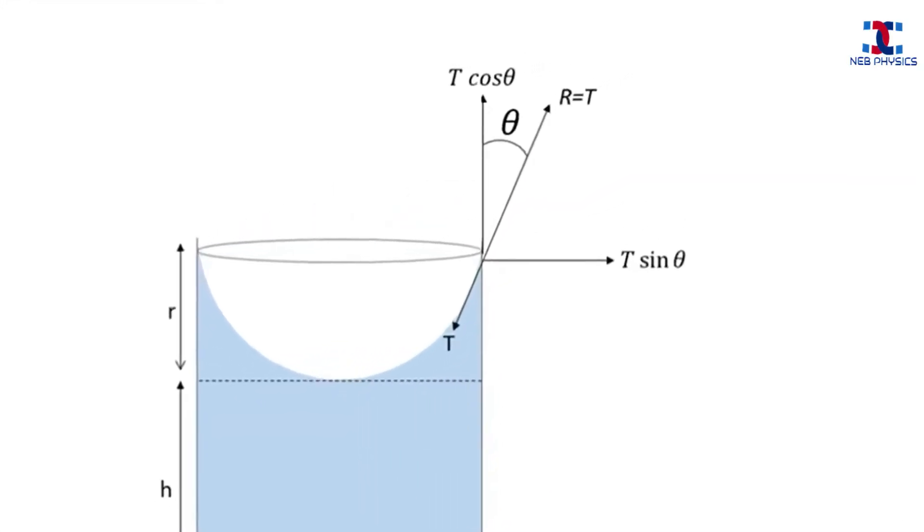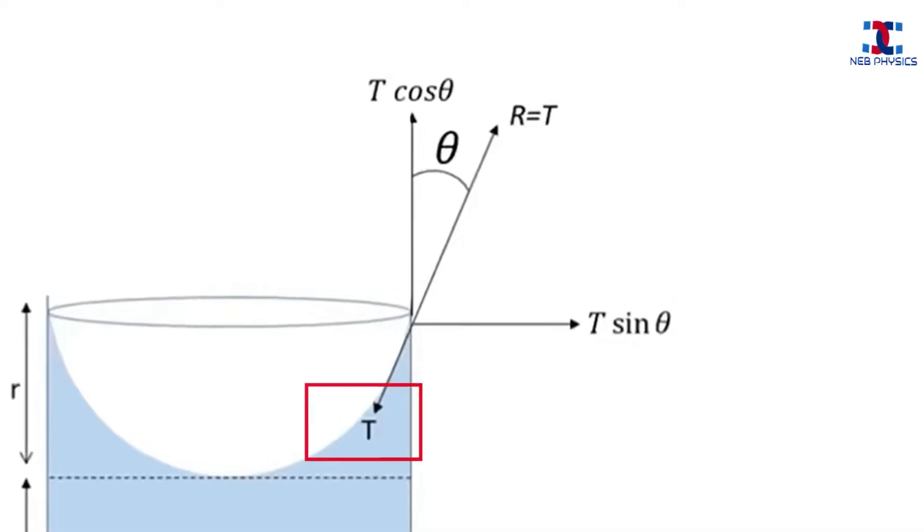The surface tension is directed inward along the tangent to the surface of liquid against which the wall of tube provides reaction which is directed outward. The horizontal component of surface tension, T sin θ, cancels out because of the existence of equal and opposite component on the left wall of the tube.